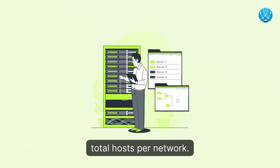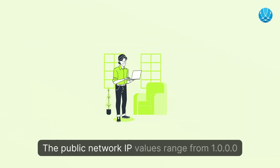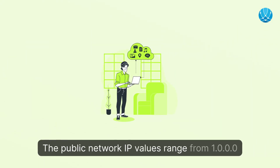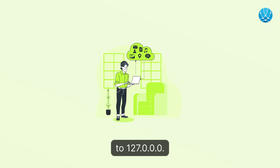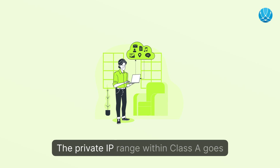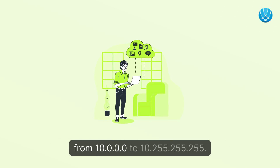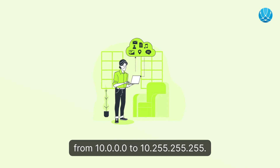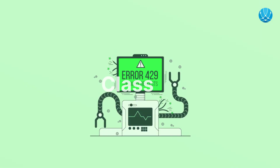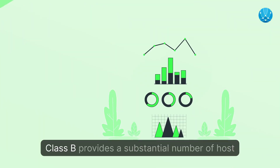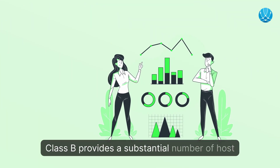Class A allows for the highest number of total hosts per network. The public network IP values range from 1.0.0.0 to 127.0.0.0. The private IP range within Class A goes from 10.0.0.0 to 10.255.255.255.